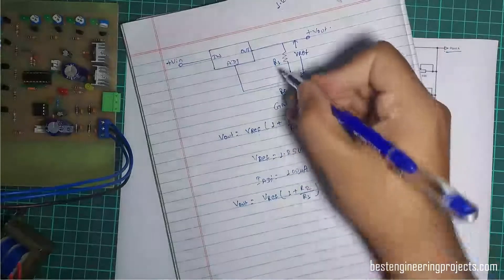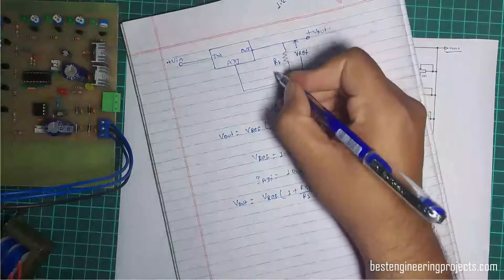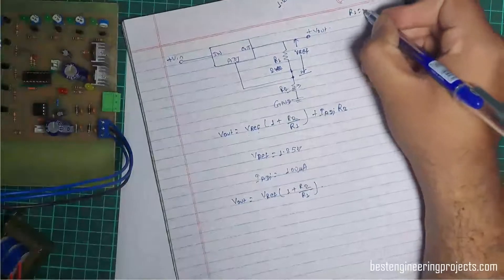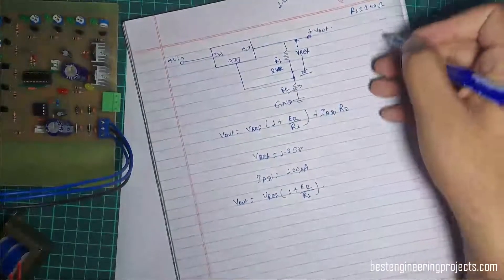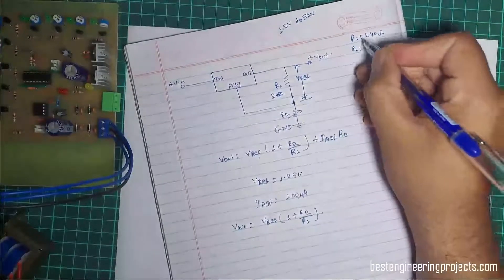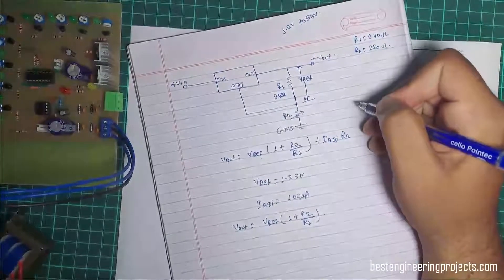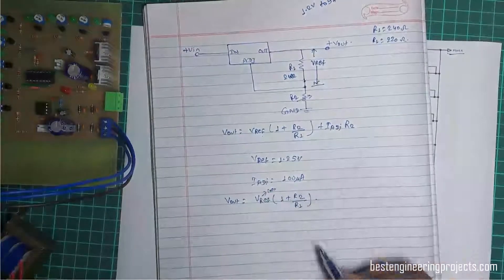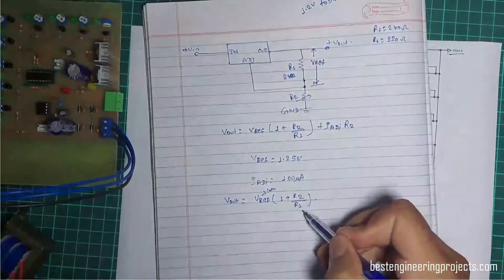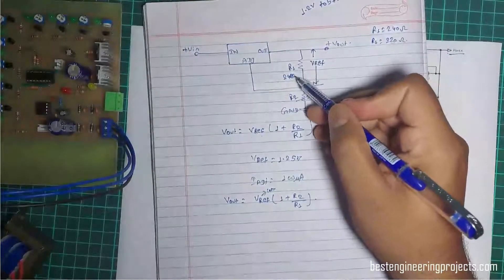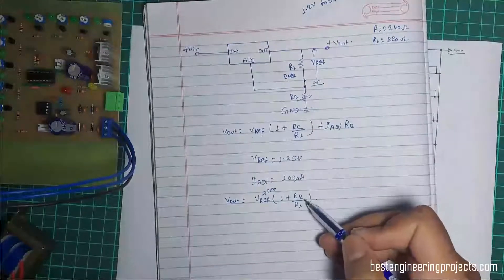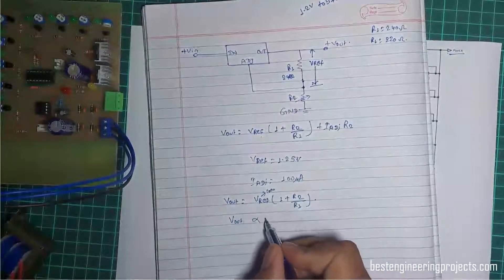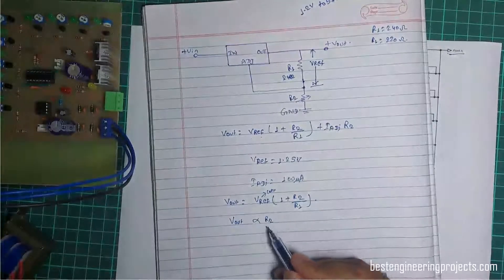The current-set resistor R1 is usually 240 ohms. If you cannot find exactly 240 ohms, use the nearest value. In this circuit we are using R1 equal to 220 ohms. Since Vref and R1 are constant, the only variable value is R2. Thus Vout is directly proportional to R2, and the value of R2 determines the value of Vout.